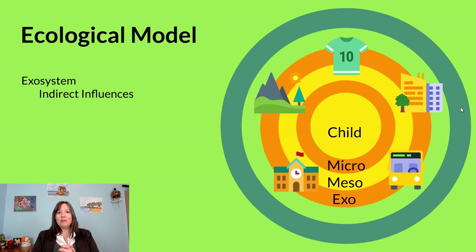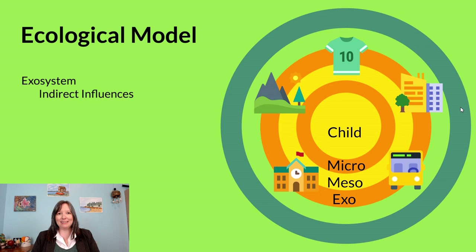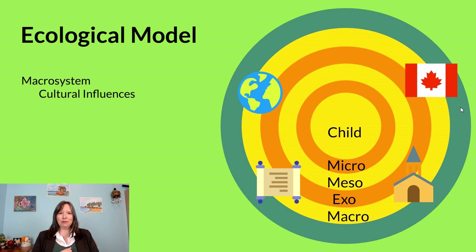Outside the mesosystem, we have what's known as the exosystem — the more indirect influences in our life. We might talk to some people in our school, but we don't directly interact with everyone every day. The whole school environment would be in our exosystem. Your neighborhood and sports team can still influence you through the social norms that exist there. Outside the exosystem is the broader macrosystem — the more intangible cultural things like what country you live in, religion, parents' education level, and how people socialize with you based on perceived ethnicity.